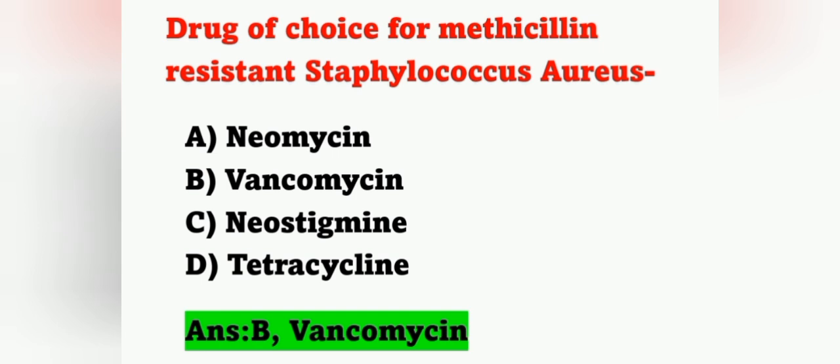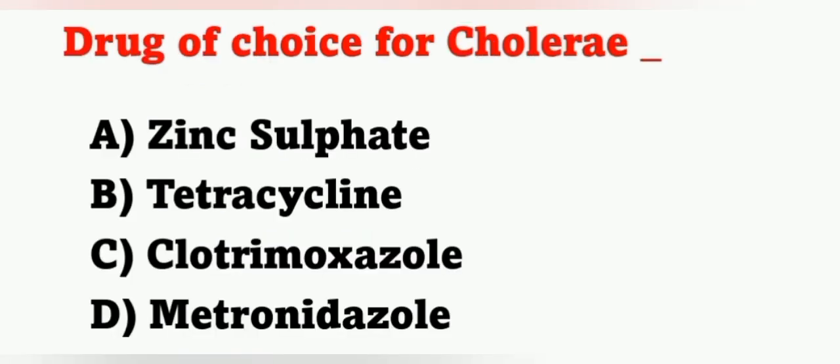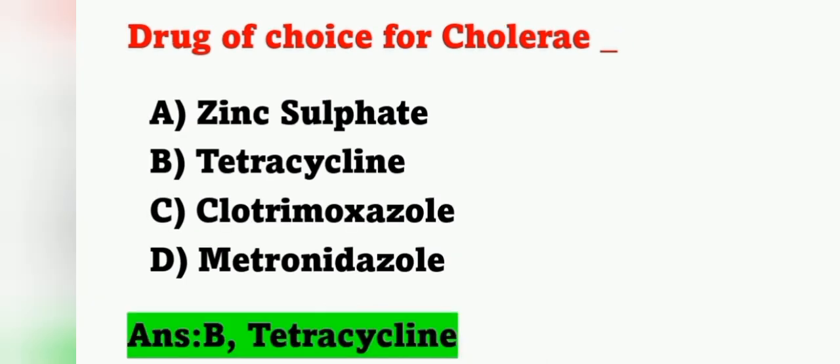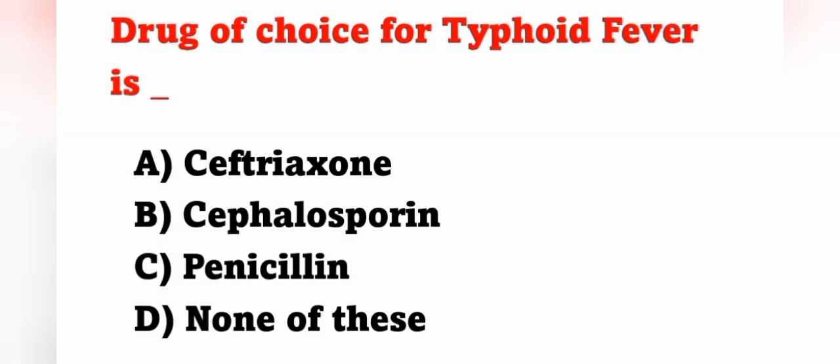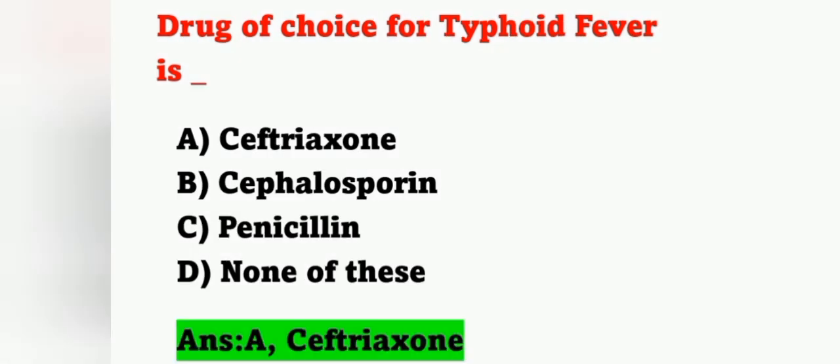Next question: drug of choice for cholera is — option A: zinc sulfate, option B: tetracycline, option C: cotrimoxazole, option D: metronidazole. Drug of choice for cholera is tetracycline, option B. Next, drug of choice for typhoid fever is — option A: ceftriaxone, option B: cephalosporin, option C: penicillin, option D: none of these. For typhoid fever it is ceftriaxone, option A is correct.